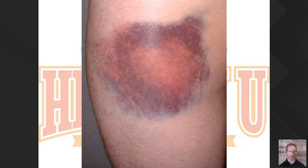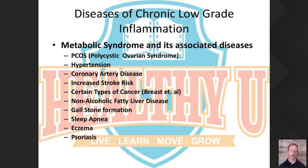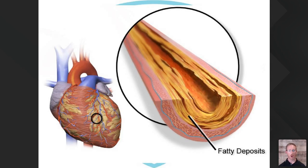That chronic inflammation starts to change the tissues. When we look at the arteries and the disease processes, we know this is a long-term process of the body being inflamed for a long time. Metabolic syndrome is what they call this classification of chronic low-grade systemic inflammation, and there's a whole host of associated diseases: PCOS, hypertension, coronary artery disease, increased stroke risk, non-alcoholic fatty liver disease, gallstones, psoriasis — you name it.